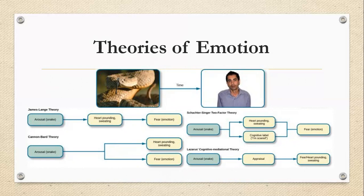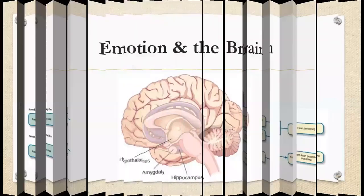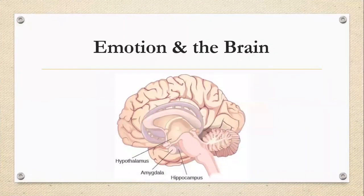Straying away from the four theories of emotion, let's talk a bit about emotion and the brain. The limbic system is involved in mediating emotional responses and memory. For those who forgot, the limbic system is comprised of the hypothalamus, thalamus, amygdala, and hippocampus.